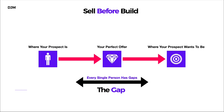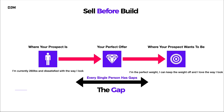Through marketing — giving people the opportunity — we say 'this offer will meet your needs.' Here's an example: your prospect currently says 'I'm 260 pounds and dissatisfied with the way I look.' Where do they want to be? Ideally: 'I'm at the perfect weight, I can keep the weight off, and I love the way I look.' If your perfect offer stands in the middle, it says: 'I can get you from where you currently are to where you want to be.'